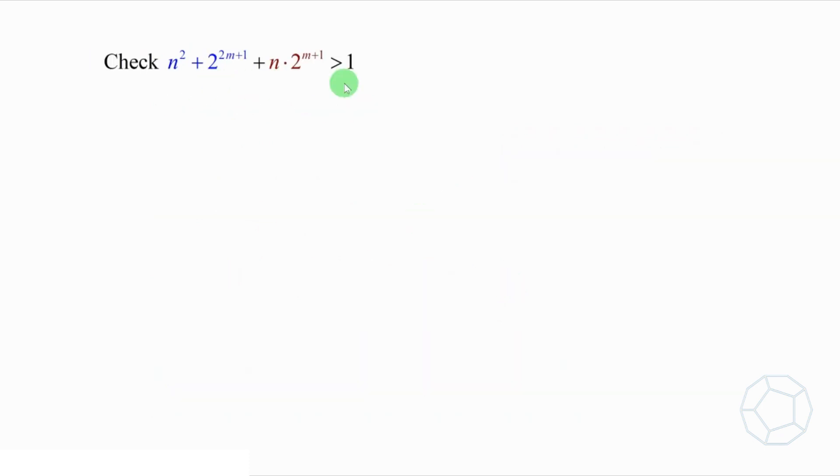Let's look at the first bracket. Because it is the sum of three positive terms, therefore, it should be larger than 1. Now, we come to the second bracket. It's not that obvious to see that it must be larger than 1, because we have a negative term here.